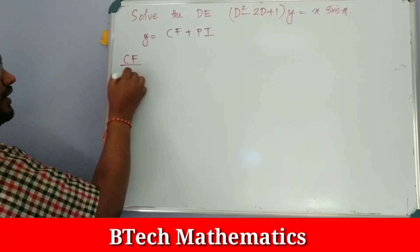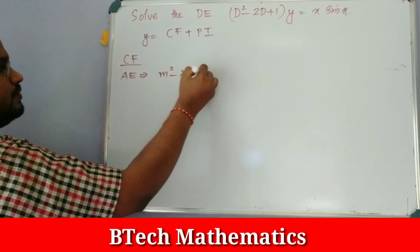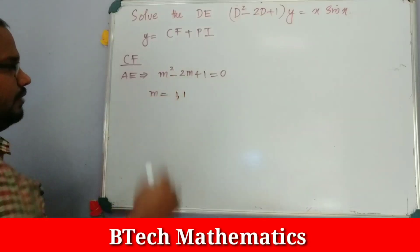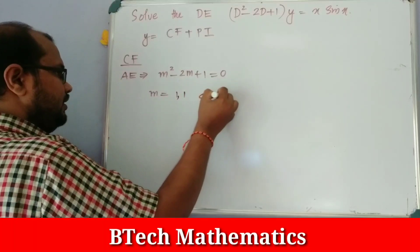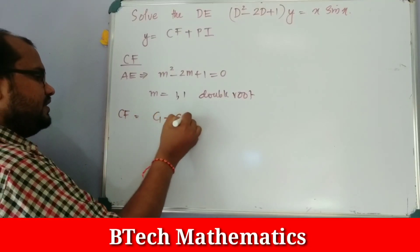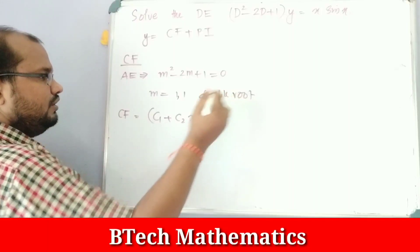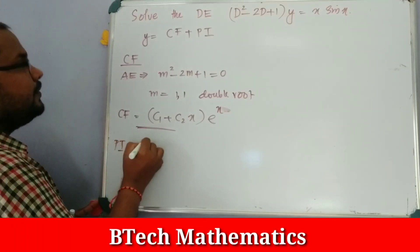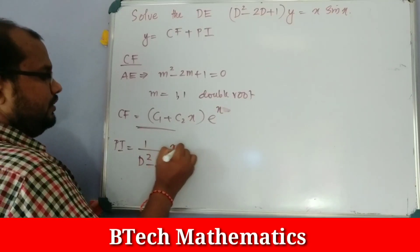The solution is y = CF + PI. For the CF, the auxiliary equation is m² − 2m + 1 = 0, giving m = 1 (double root). Therefore CF = (C₁ + C₂x)·eˣ. For the PI: PI = 1/(D² − 2D + 1) into x·sin(x).